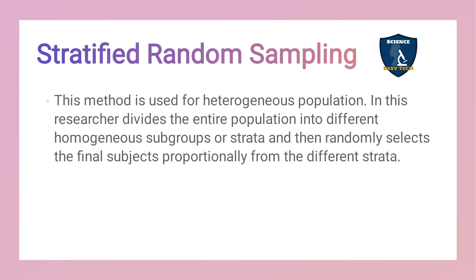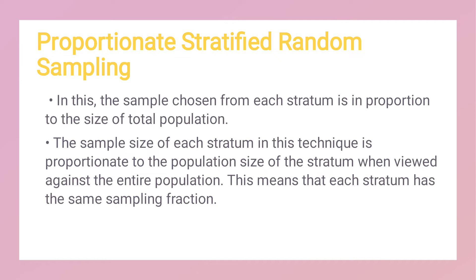Next is stratified random sampling. This method is used for heterogeneous populations. The researcher divides the entire population into different homogeneous subgroups called strata, and then randomly selects subjects proportionally from each stratum. There are two types: proportionate stratified random sampling and disproportionate stratified random sampling. In proportionate stratified sampling, the sample chosen from each stratum is in proportion to the size of the total population.